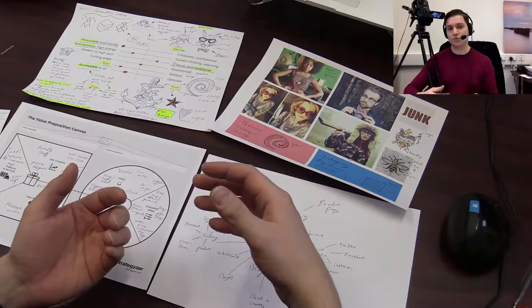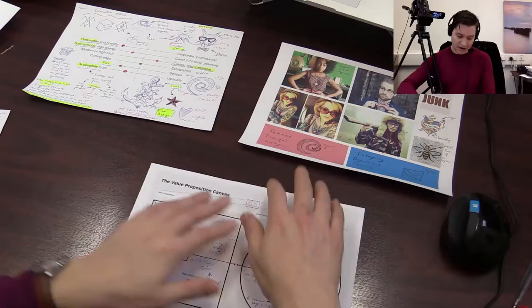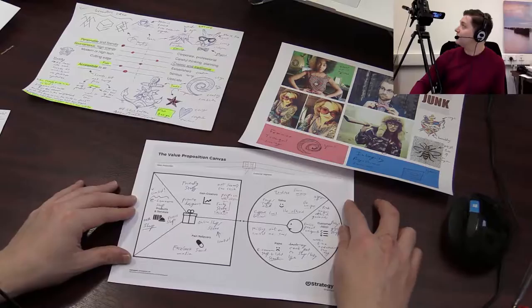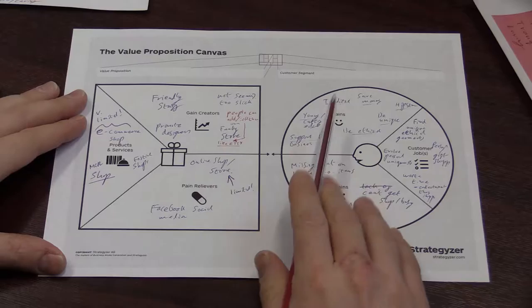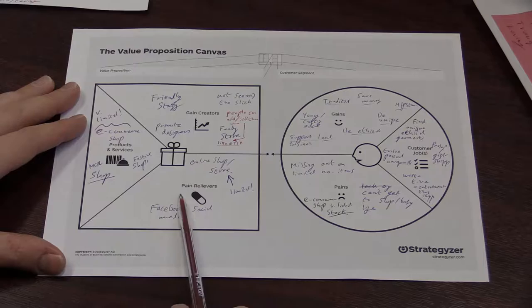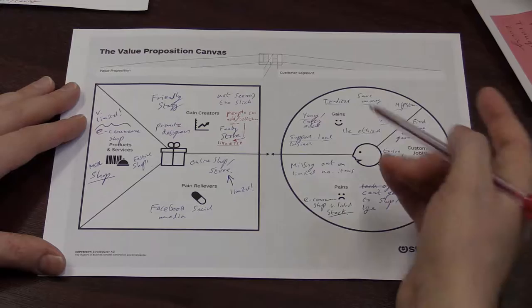So let's start with our value proposition canvas, which is here. So hopefully you can see it quite nicely on our camera. And I'm going to zoom in a bit so we can see just there. So what we've got here, we have got the customer gains, jobs, and pains, as well as gain creators, products and services, and pain relievers. So we've covered this in the lecture, so you've already had a go at this.